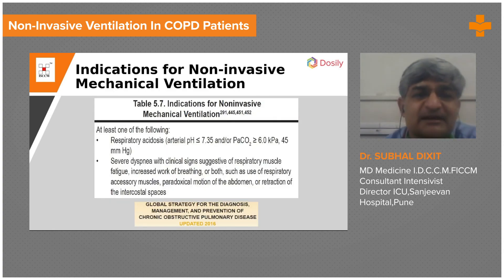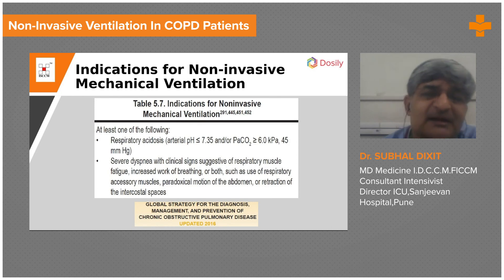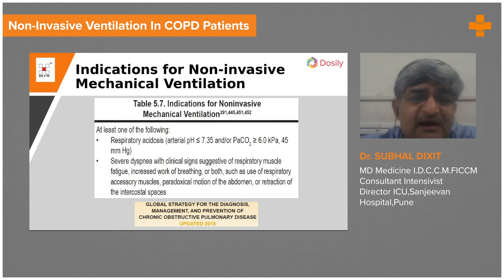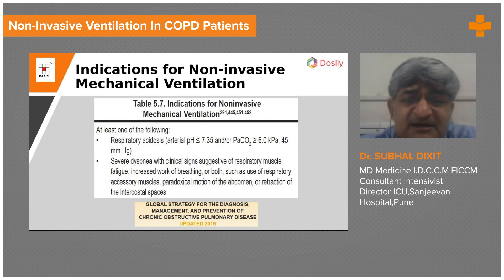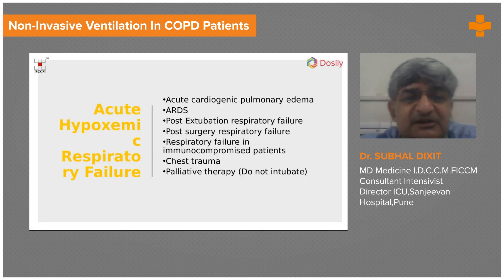Non-invasive ventilation is the key. The indications for non-invasive mechanical ventilation include respiratory acidosis with pH less than 7.35, severe dyspnea with clinical signs suggestive of acute respiratory muscle fatigue — such as the use of accessory muscles of respiration, paradoxical motion of respiration, and retraction of intercostal spaces. These are the main indications for non-invasive ventilation in COPD.